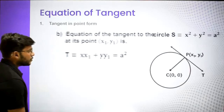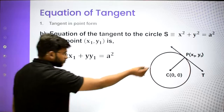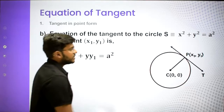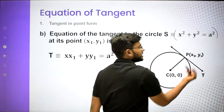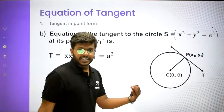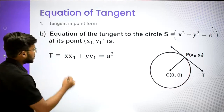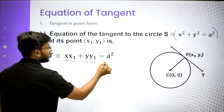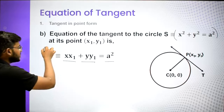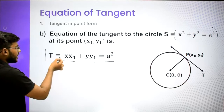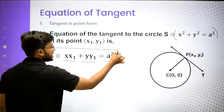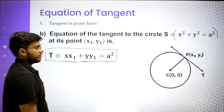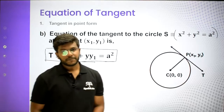Similarly, if you have x² + y² = a² as the equation, this is also a circle with center at origin. The equation of tangent will simply become x·x1 + y·y1 = a², since the constant term remains as it is. You can clearly see this is T equal to 0 - the equation of tangent in point form.